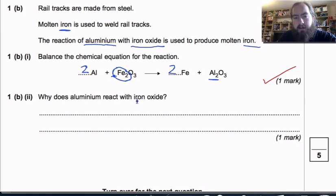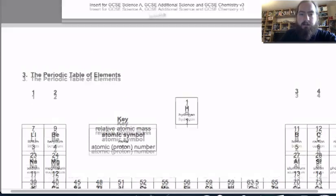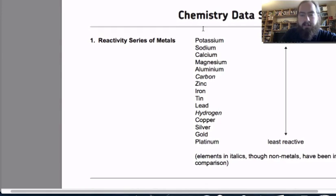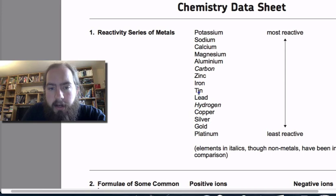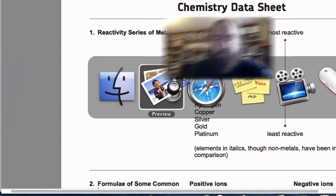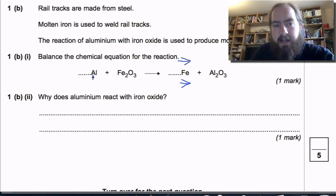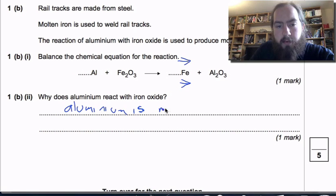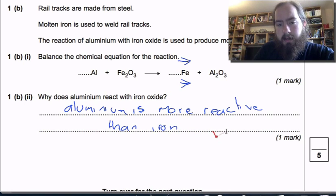Why does aluminum react with iron oxide? Now for this part of the question, they're expecting you to use the datasheet again. And on the first part of the datasheet we've got a reactivity series. And if we're looking for iron and aluminum we can see that on this reactivity series iron is less reactive than aluminum or that aluminum is more reactive than iron. What this means is that when they're reacting the aluminum will replace the iron in the oxide. So why does aluminum react with iron? Aluminum is more reactive than iron. I'll get you one mark there.